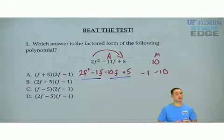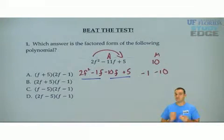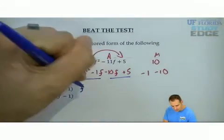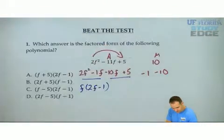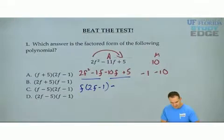First two, last two. What's in common with the first two? What's the GCF? Well, the GCF is an f. We're left with 2f minus 1. Drop down the middle sign.